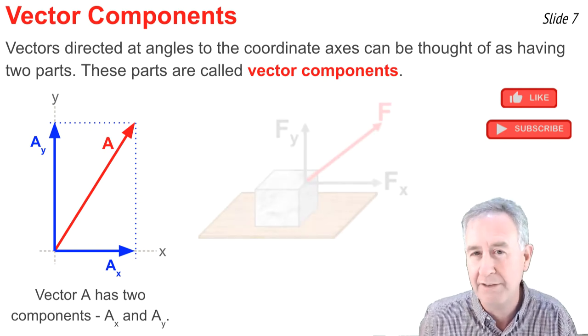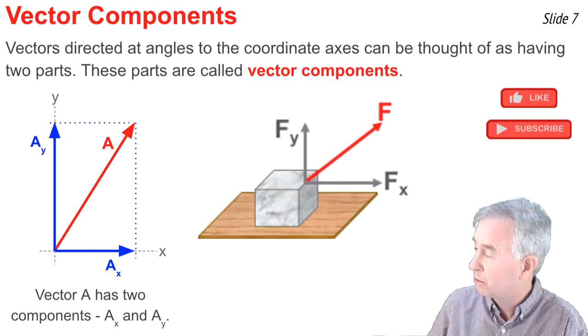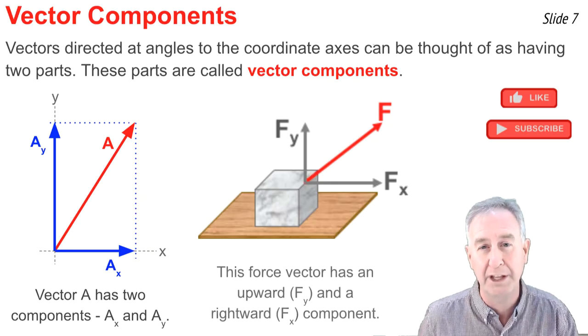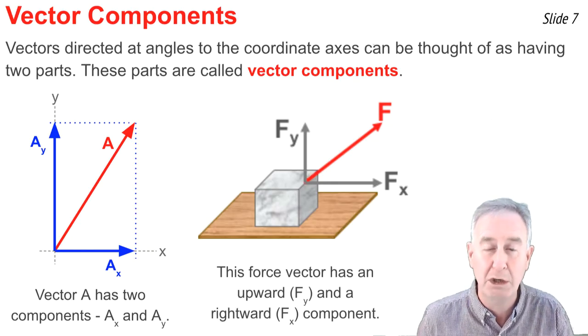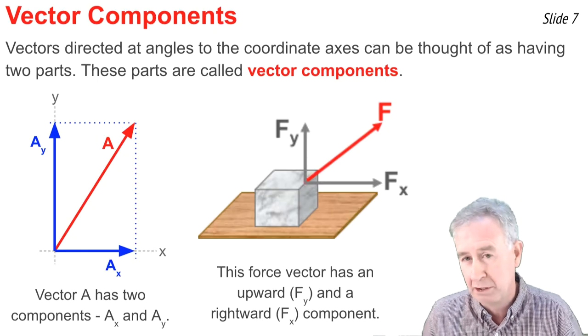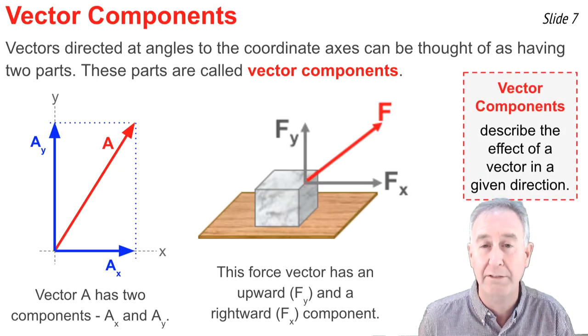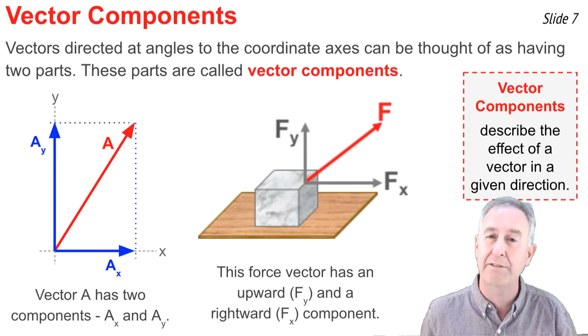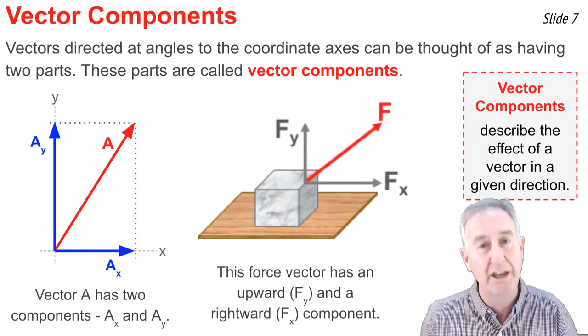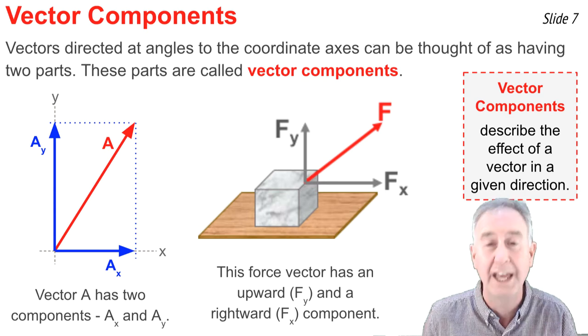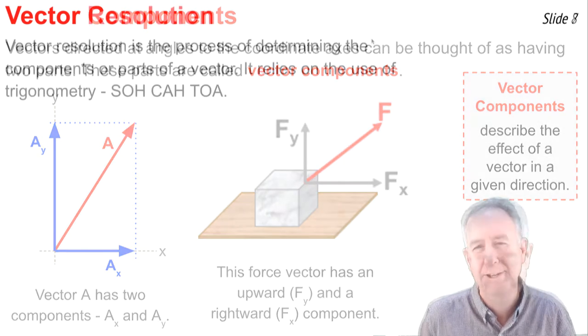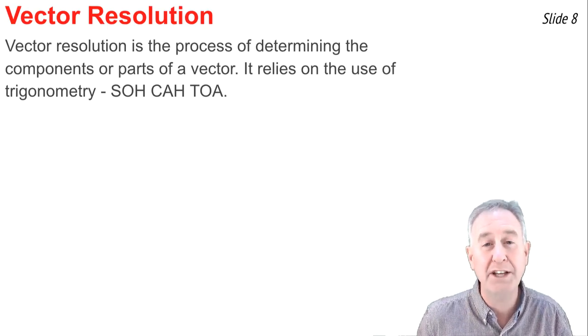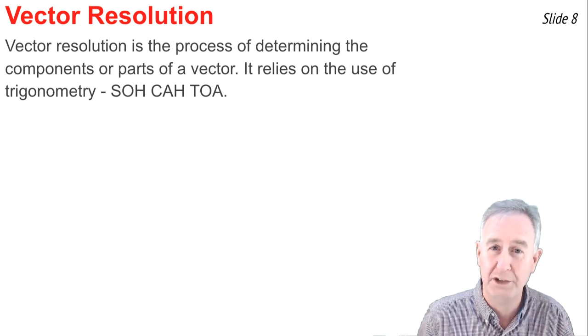This becomes important if you have an angled force being applied to an object, say, to accelerate it across a horizontal surface. That angled force has an x component and a y component. And it's these two components that have to be determined in order to determine the acceleration of this crate. We can think of components as describing the effect of the vector in a given direction. For instance, in this case, fx describes the effect of the force vector f in the horizontal direction. And if I want to determine the horizontal acceleration, I need to know this fx component. Vector resolution is the process of determining the components of a vector. And it relies on the use of the trig functions sine, cosine, and tangent. Let me show you how.